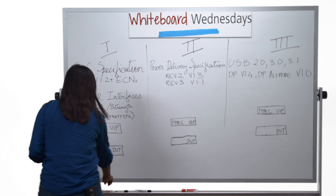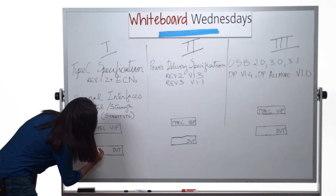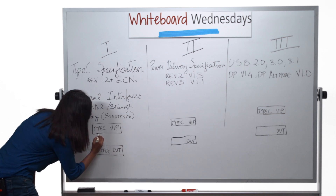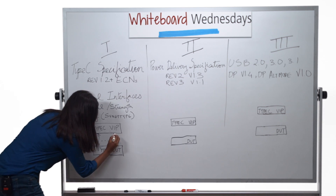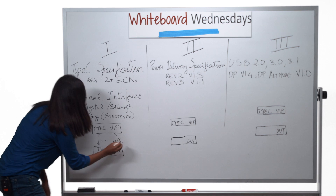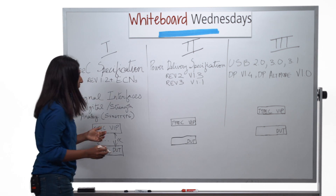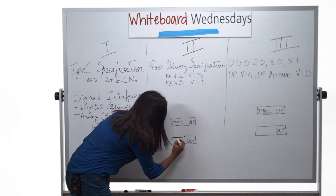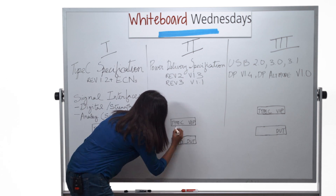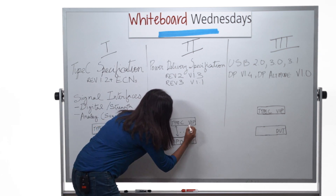Your design can use the Type-C VIP with a Type-C DUT and a Type-C interface, digital or analog. The Type-C VIP can also be used with a PD DUT and that same Type-C interface.